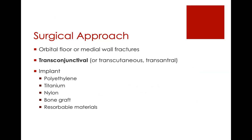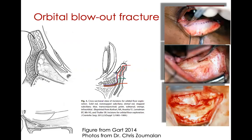The surgical approach to orbital fractures: we almost always go transconjunctivally. Others will have transdermal approaches, and sometimes depending on the fracture that may be ideal. There's a wide variety of implants — bare titanium, coated titanium, resorbable like PDS, or cut implants that we shape. The approach depends on fracture size and complexity. I usually approach pretty closely under the tarsus, then dissect down to the rim without violating the septum so orbital fat stays contained, then get subperiosteal and have good access.